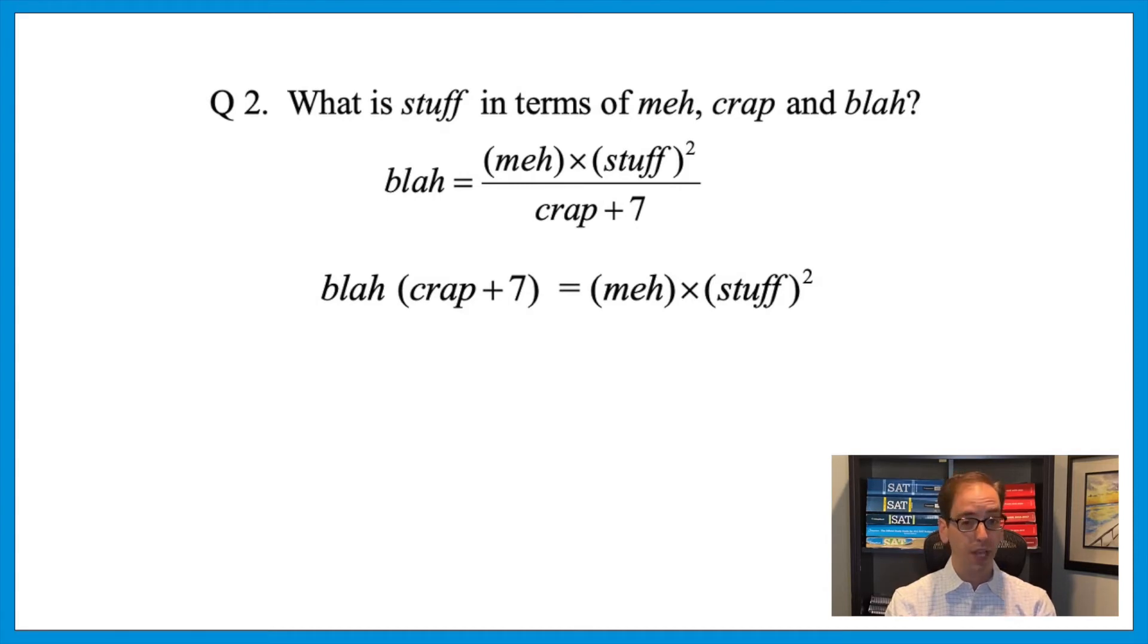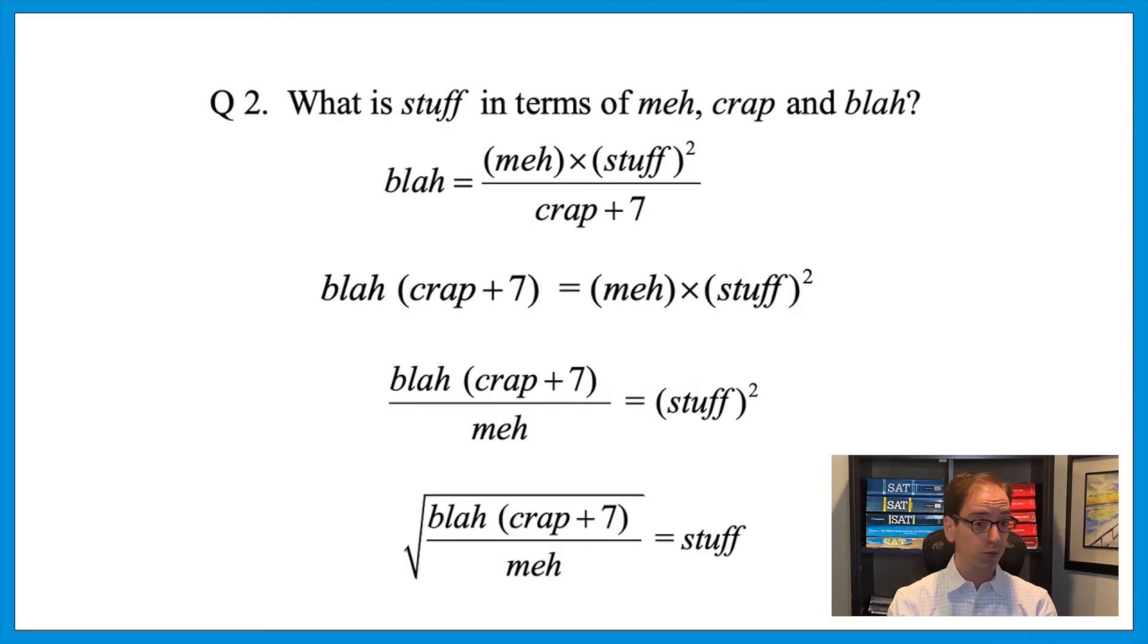Now, what would we move next? Remember, start far and get close. So the next thing we would want to move is meh. Right now we're multiplying by that, so we want to divide that to the other side. That would give us blah times crap plus 7 divided by meh equals stuff squared. And now the final step is to get rid of that exponent of 2. Inverse operations means to take the radical of each side. That would make the exponent disappear. So that would give us the square root of blah times crap plus 7 over meh equals stuff. That's the answer.